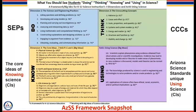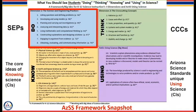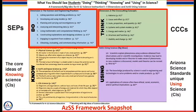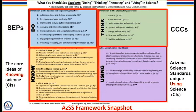Here's a document I want to share with you just to review what happened in that video. This is called the Arizona — the AZSS Framework Snapshot — and basically this is a tool that, if I were in the classroom, I would take out and really spend some time planning with. Up here we have the first dimension, the Science and Engineering Practices — this is what students are doing, how they access the content. The second dimension is the Cross-Cutting Concepts — this is the lens through which students think about phenomena. The third dimension in Arizona is actually broken into two sections: core ideas for knowing science, and what's unique to Arizona, core ideas for using science.